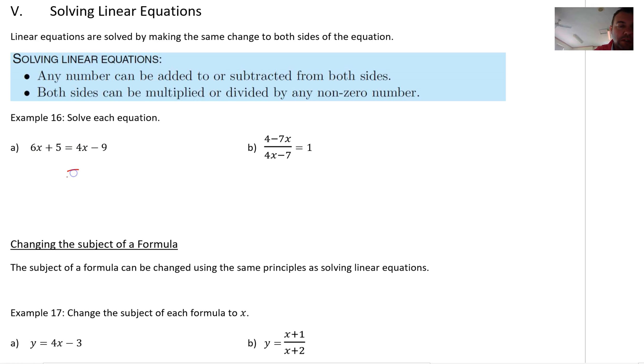So, over here, I'm going to keep my equal signs lined up. I'm going to subtract 4x from both sides, or if you like, move that 4x over here. I'm going to subtract 5 from both sides so that I get 6x minus 4x equals negative 9 minus 5. So, 2x, negative 14, and x is negative 7.